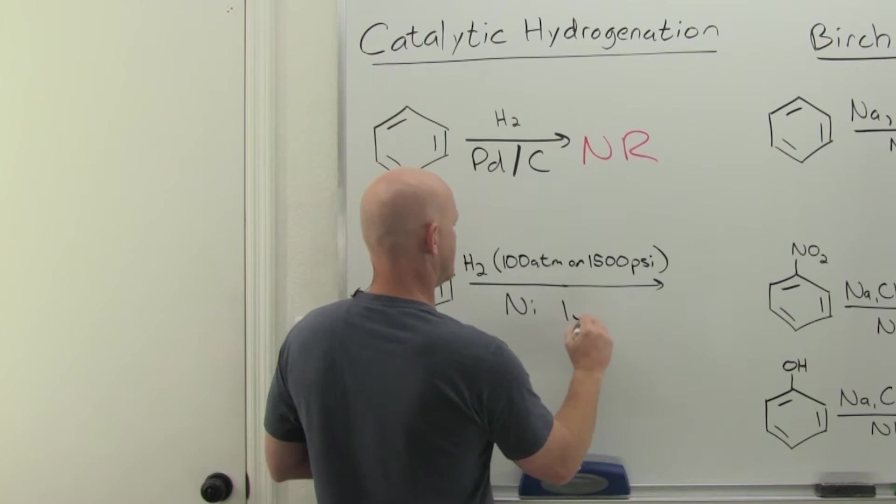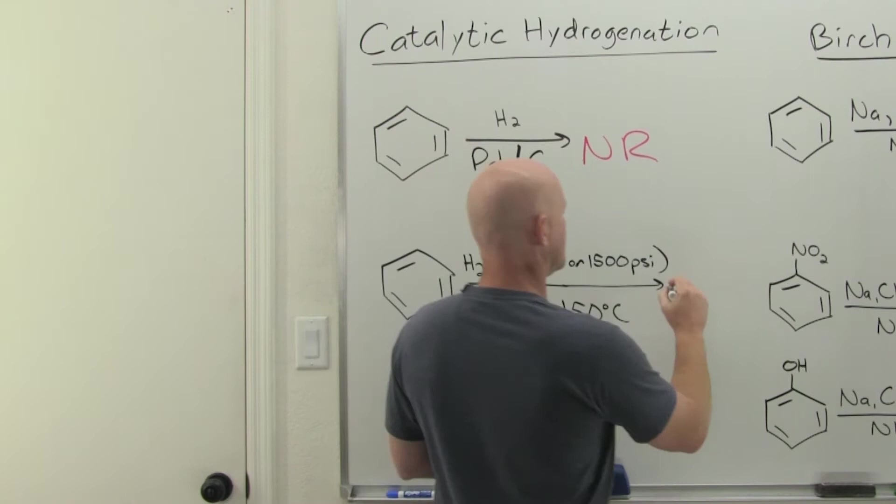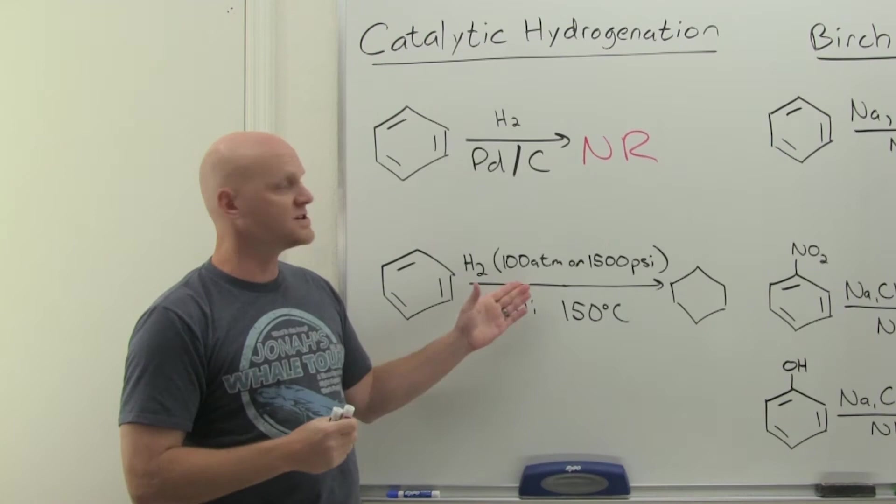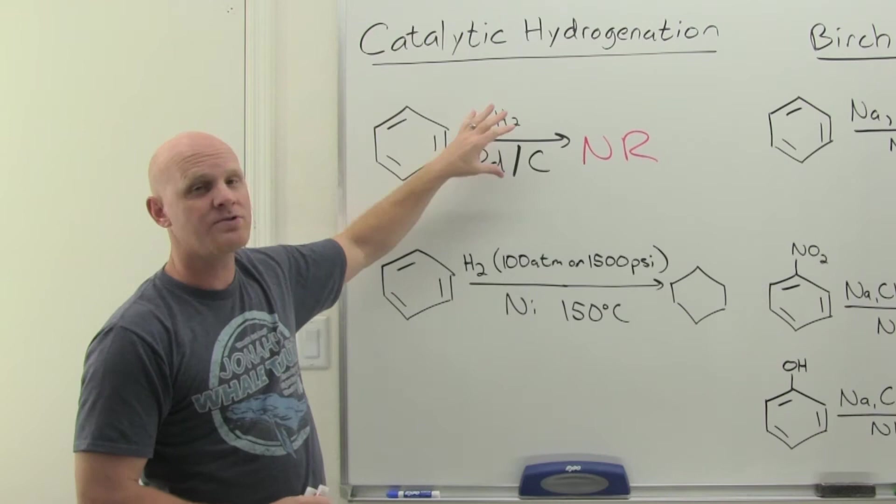And then we'll use a nickel catalyst typically, and we'll jack up the temperature just a little bit. And in this case, we can actually reduce all the pi electrons and reduce benzene just to plain old cyclohexane. But rather harsh conditions.